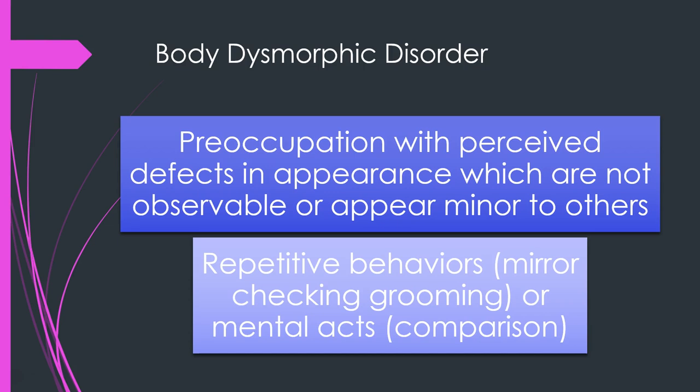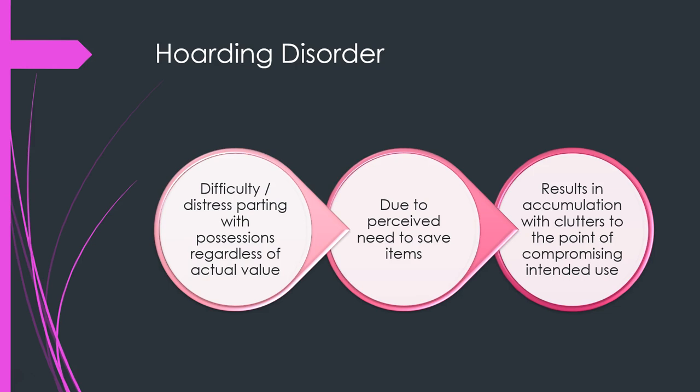Body dysmorphic disorder is a preoccupation with a perceived deficit in your appearance that's not observable or appears minor to others, along with repetitive behaviors like looking in the mirror and mental acts like comparing yourself to others. Hoarding disorder involves difficulty or distress parting with possessions regardless of their actual value, a perceived need to save items, and resulting accumulation and clutter that compromises the intended use of living spaces — like filling up a bathtub or being unable to sleep on your bed.